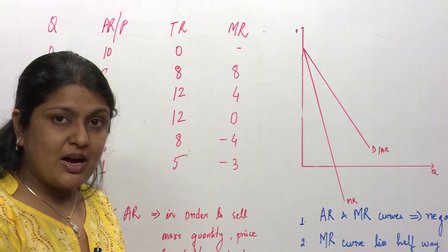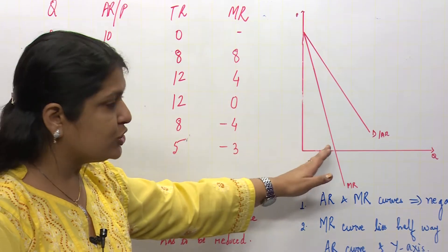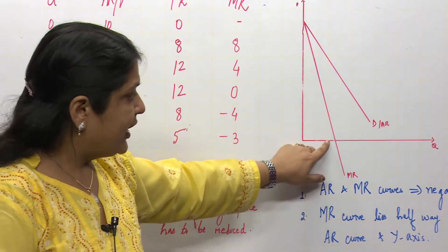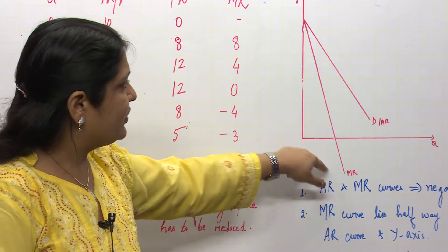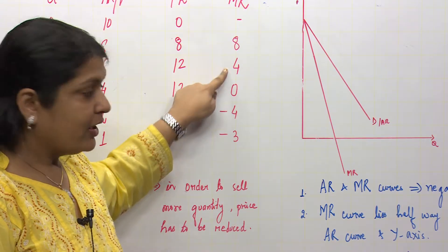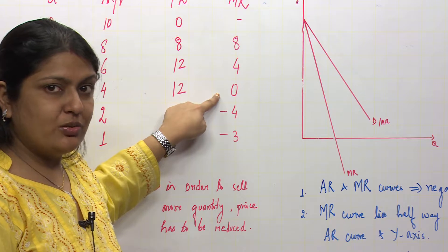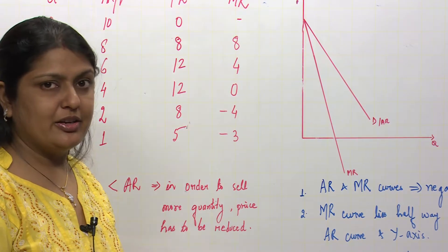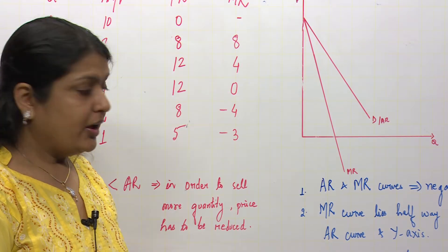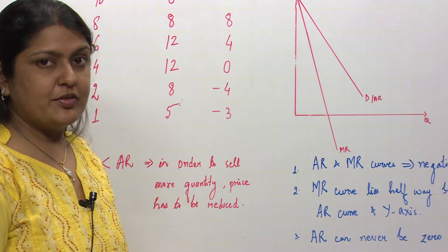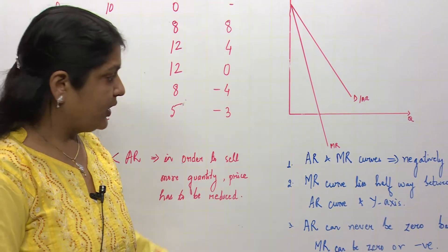But marginal revenue is downward sloping; it becomes zero and then negative. You can see downward sloping, then zero, and then it becomes negative. So average and marginal revenue curves both are negatively sloped.